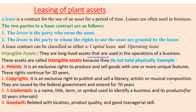When we come to leasing of plant assets: a lease is a contract for the use of an asset for a period of time. The two parties to a lease contract are the lessor — who owns the asset — and the lessee — to whom the rights to use the asset are granted by the lessor. A lease contract can be classified as either a capital lease or an operating lease.